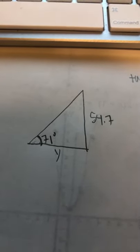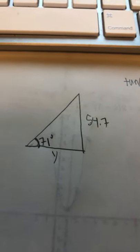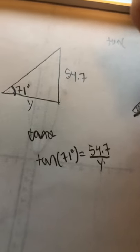Tan theta equals opposite over adjacent. So here, we can say tan of 71 degrees equals 54.7 over y.